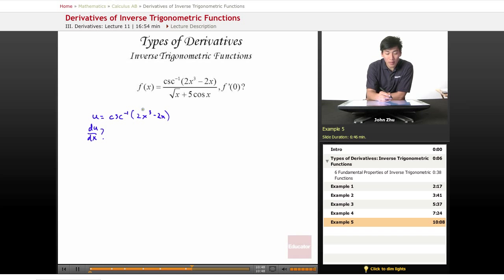So we'll probably have to do another chain rule within the chain rule. So let's set another variable. We'll call this maybe z. So z equals 2x cubed minus 2x.